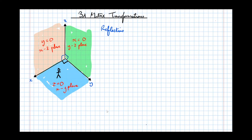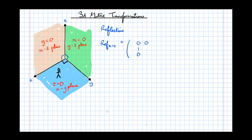The first transformation is a reflection in the plane X equals 0 — call that matrix ref X equals 0. Taking a point on the X axis and reflecting through the plane X equals 0, the point is made negative in the X direction, reflected to the opposite side of the plane. In the matrix, the Y coordinates stay the same (identity elements for Y), the Z coordinates stay the same, but the X coordinates are made negative — reflected in the matrix by making the X element negative.